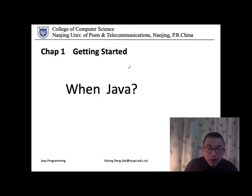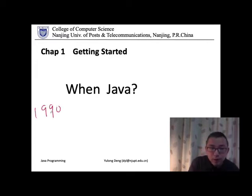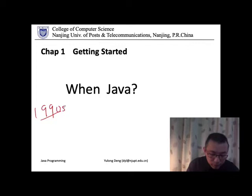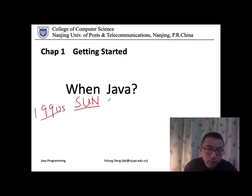The first question we want to ask is, when was Java born? Let's get back to the 1990s. In the 1990s, there is a corporation named Sun. The Sun Corporation — the three letters S, U, and N stand for Stanford University Network. It is a company located in Silicon Valley, California, in the United States.